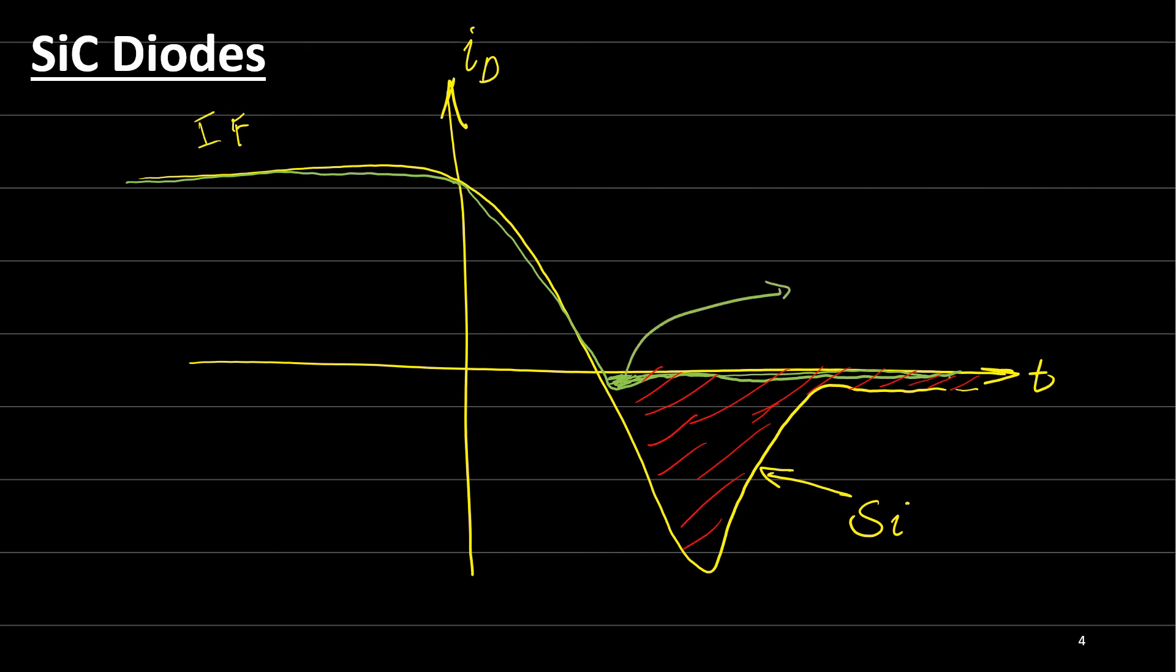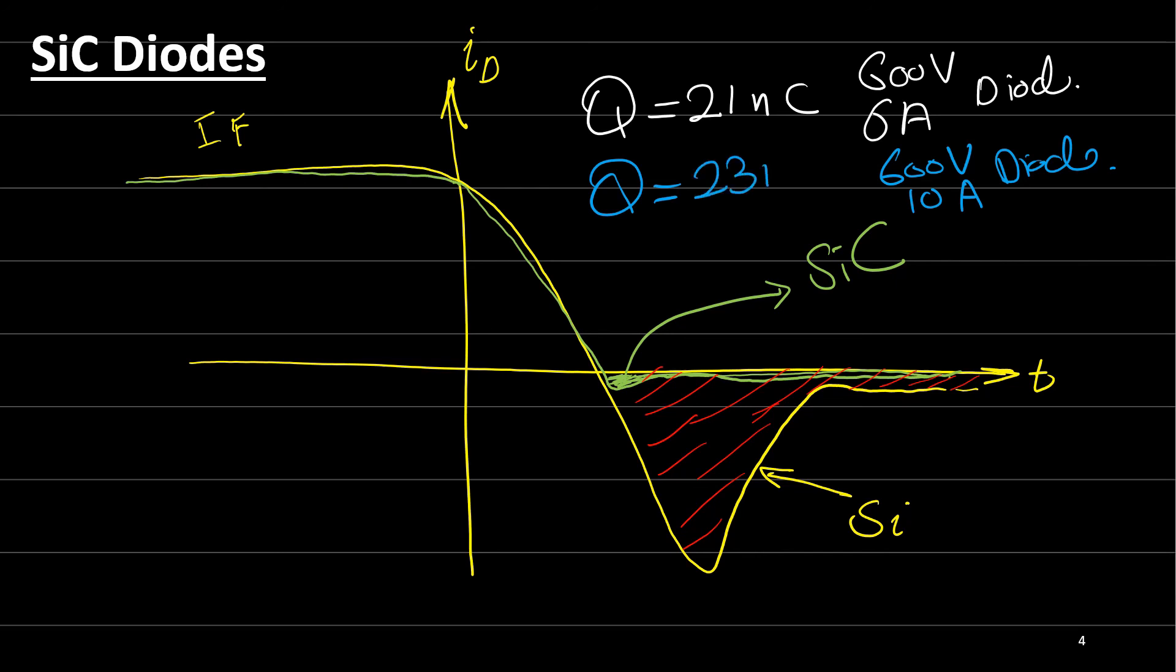So here is the silicon carbide diode. The typical storage charge for silicon carbide diode is equal to 21 nanocoulomb for 600 volts and 6 ampere diode. And if you talk about 600 volts and 10 ampere diode, this value will not be changed much. So the charge will be around 23 nanocoulomb.